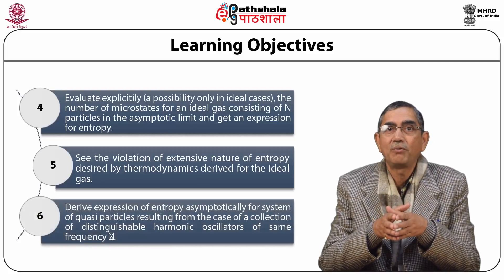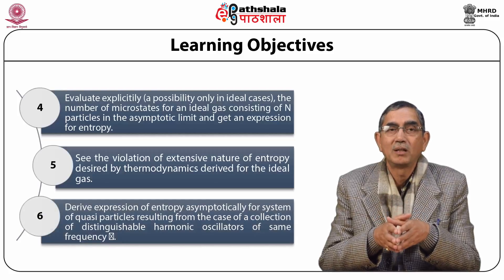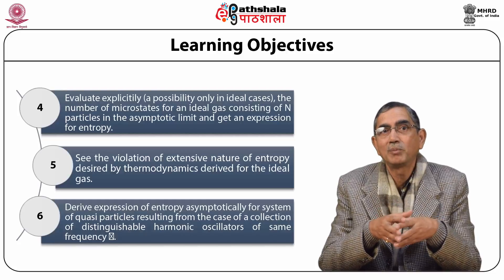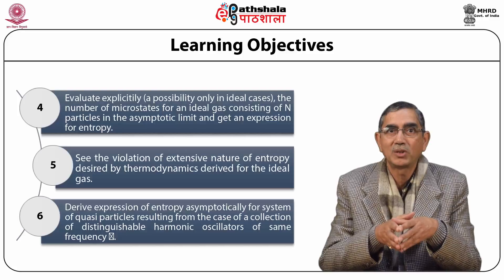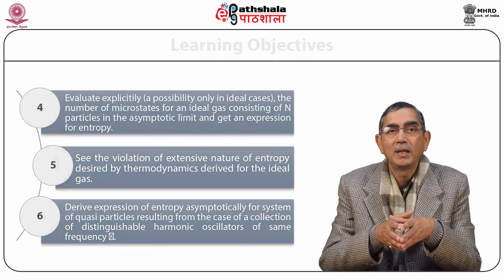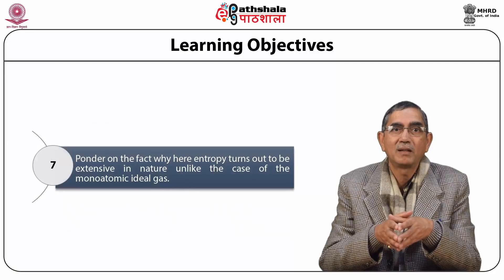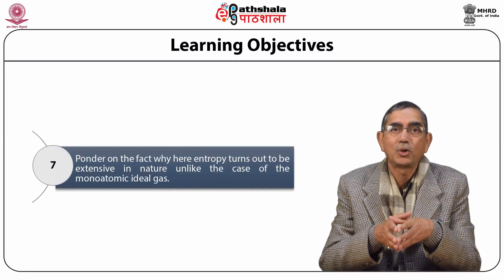We will derive the expression of entropy asymptotically for a system of quasi-particles resulting from a collection of distinguishable harmonic oscillators of same frequency nu, and ponder on why entropy turns out to be extensive here, unlike the case of the monoatomic ideal gas. This module has been developed for postgraduate level.